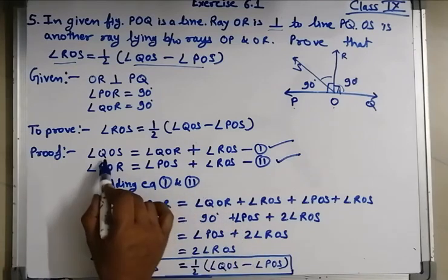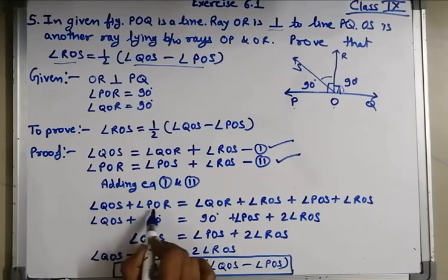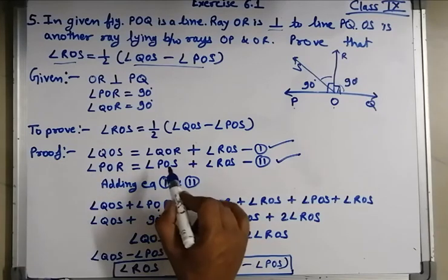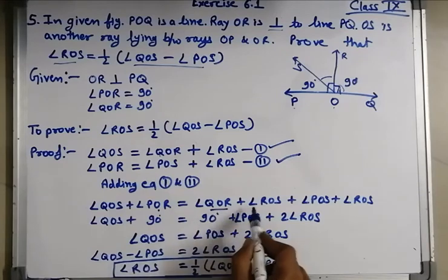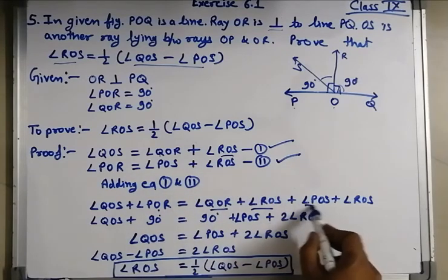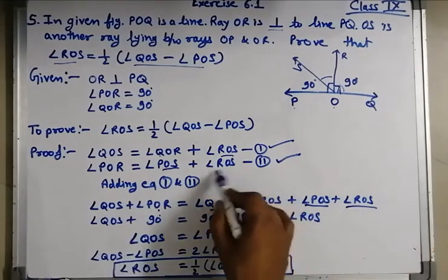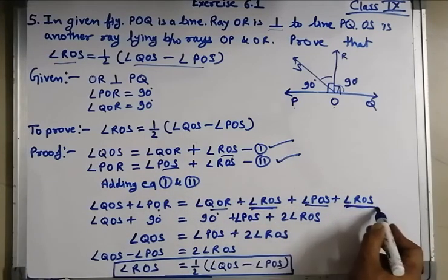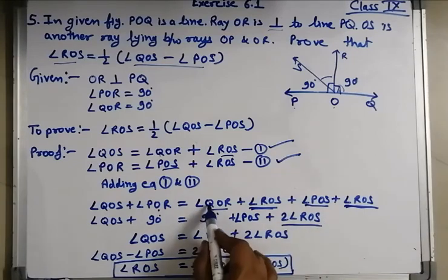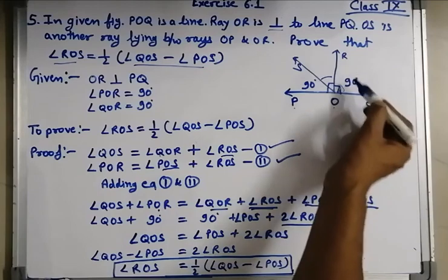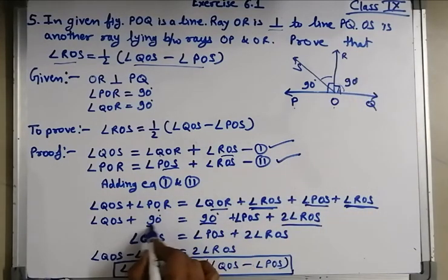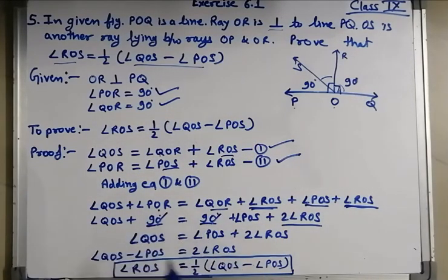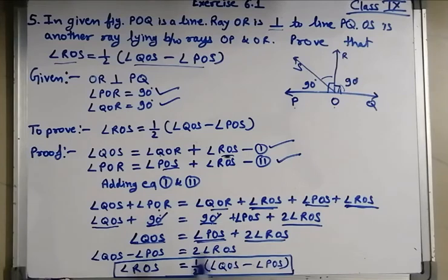Adding both equations: QOS plus POR equals QOR plus ROS plus POS plus ROS. We have 2 ROS on the right. QOR is 90 degrees and POR is 90 degrees, so the 90s cancel. Now angle QOS equals angle POS plus 2 angle ROS. Transferring POS to the left hand side: QOS minus POS equals 2 angle ROS.